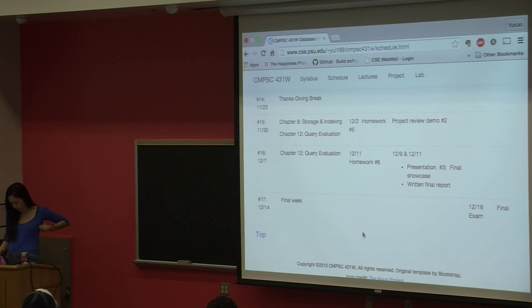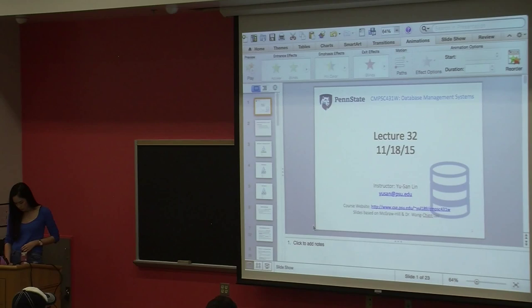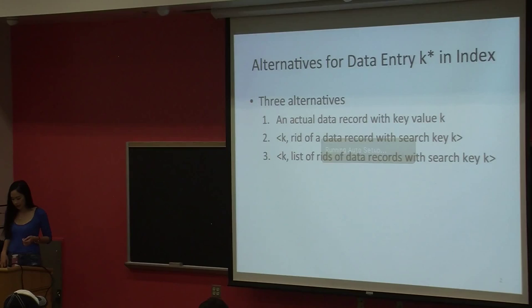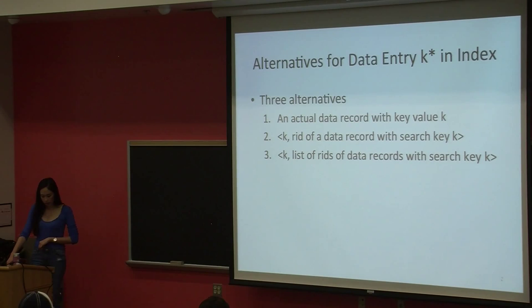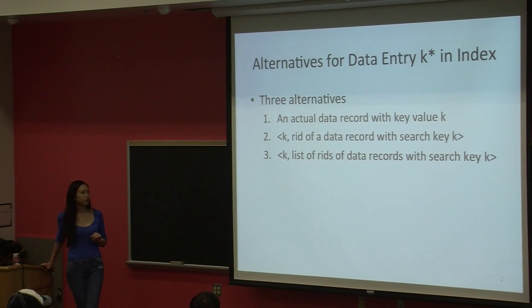Alright, let's get started with chapter 8 with today's lecture. So, a review from last time: last time near the end of the lecture we were talking about three alternatives for data entry. Data entry is basically what directs you to the data records — we denote that with K. Last time we talked about these three alternatives. The first one is the actual data record with key value K.